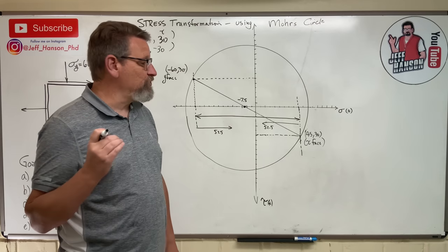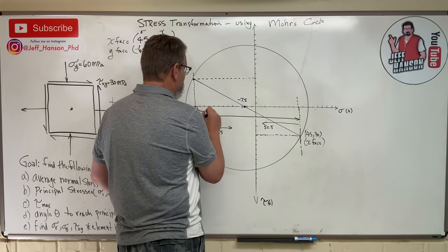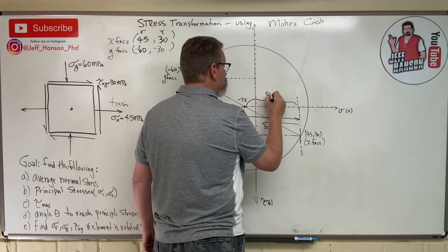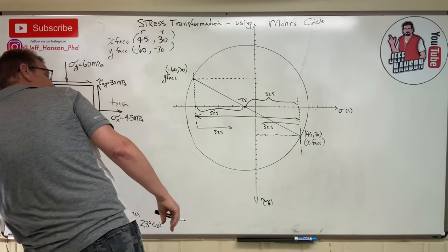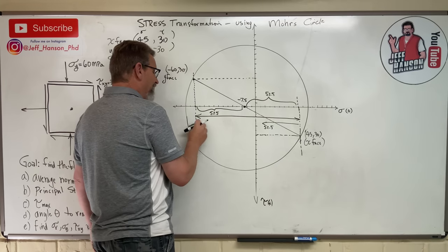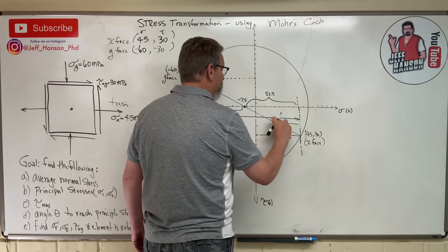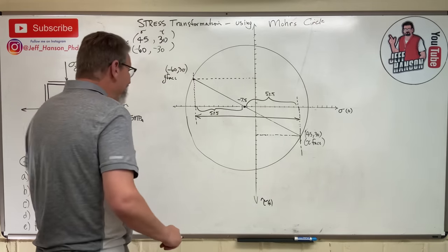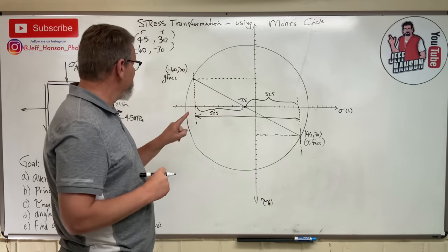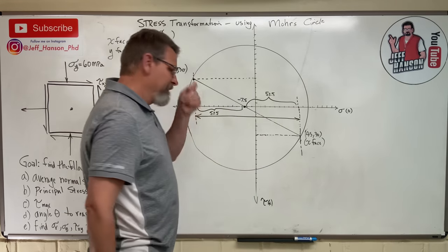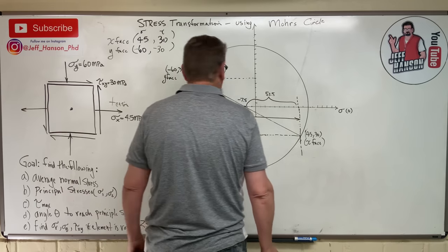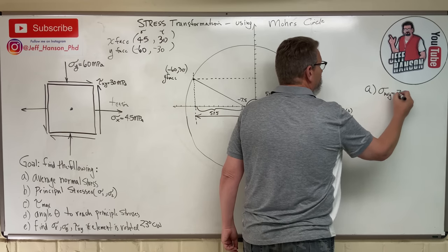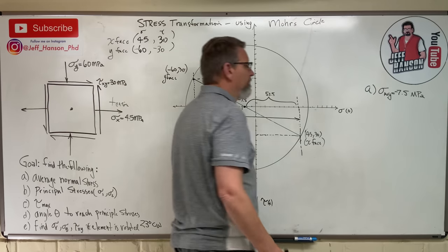So the center of the circle is at negative 7.5 on the sigma axis. The distance from center to each end is 52.5. The book has a fancy equation for that, but really it's just the midpoint of the circle — halfway between the two endpoints. And we just found something: that center value is sigma average. It's the average between the two sigma values. Sigma average equals negative 7.5 megapascals. That's answer A.